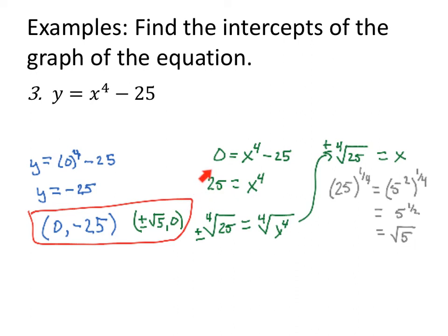My x-intercept has a y-value of 0. If 0 equals x to the fourth minus 25, I'm going to add 25 to both sides. If 25 equals x to the fourth, well, what's the opposite of x to the fourth? I want to isolate x. So I'm going to use the fourth root. Roots are opposite operations to powers. So the fourth root of x to the fourth power will give me x. When I take an even root, I have to include the plus or minus. So the fourth root of 25 plus or minus involved there.